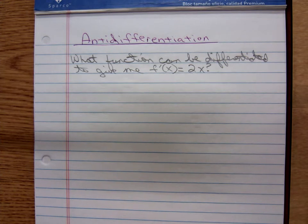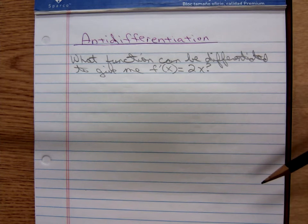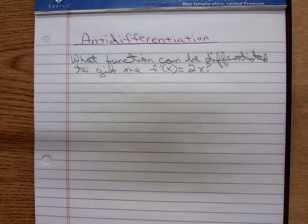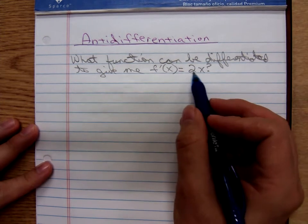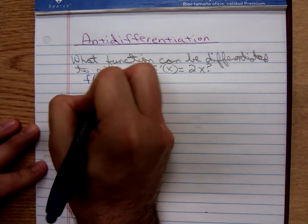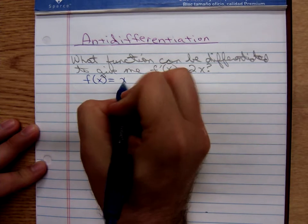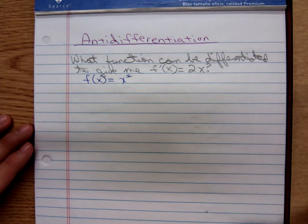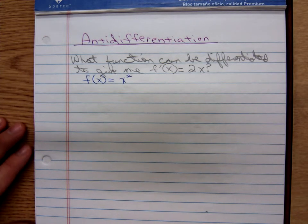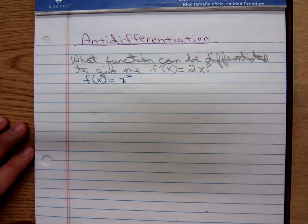Can you give me a function that can be differentiated to give you f'(x) = 2x? Yeah, we can do that. Going backwards, it's not hard to realize that x², if you differentiated x², that would give you back 2x. And I claim there's a lot more functions than just x², f(x) = x², that can be differentiated to give us back 2x. Can you think of another one?